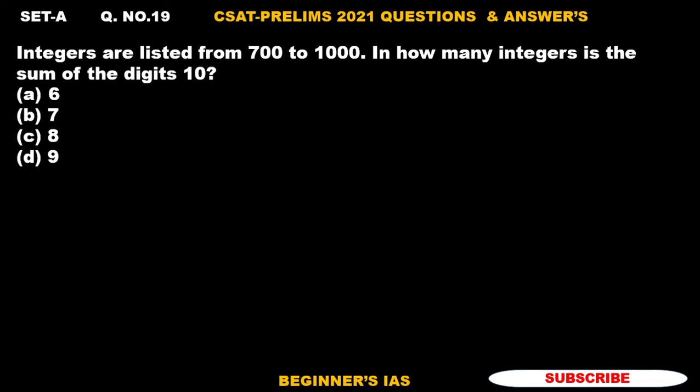Hello everyone, welcome. Let's discuss question number 19. Integers are listed from 700 to 1000. In how many integers is the sum of the digits 10? Be sure that it starts with three digits, and you need to find out when the sum of the digits equals 10.